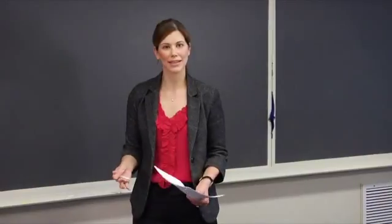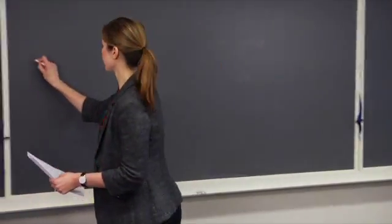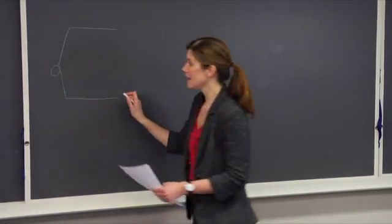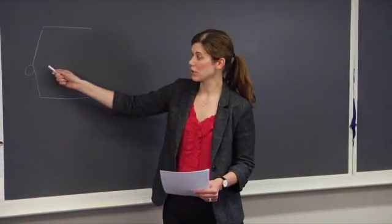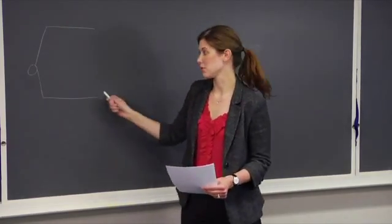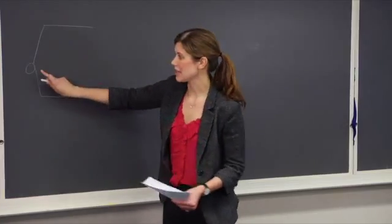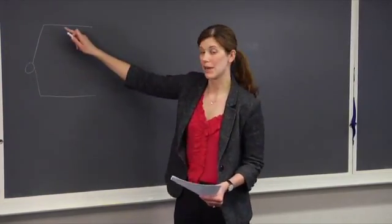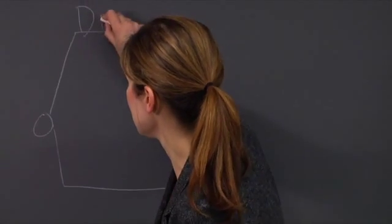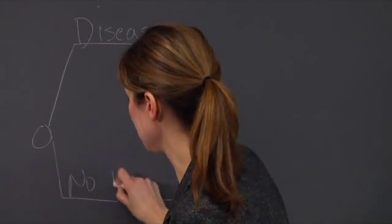We're going to begin by drawing a probability tree. In this tree, uncertain nodes are represented by circles and the branches correspond to a particular event that can happen. The first branch is going to correspond to whether or not a patient has the disease or does not have the disease.